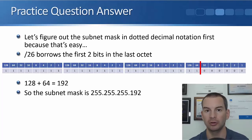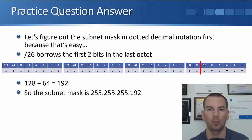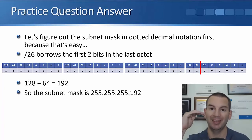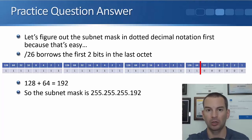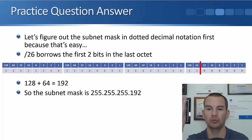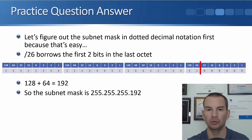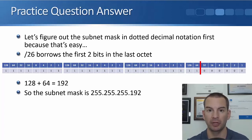Later on you'll be able to do a lot of these in your head, but when you're first learning it's way easier to write it all out. Take a piece of paper, start at the top right, and write 1, 2, 4, 8, 16, 32, 64, 128. Then put a dot in and continue: 1, 2, 4, 8, and so on — until you've drawn out the bit pattern for all four octets in your subnet mask.